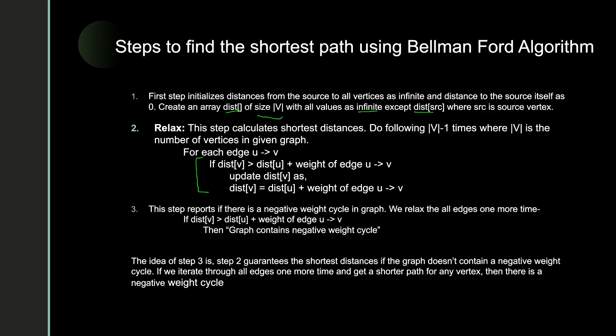The third step is for detecting if the graph contains a negative edge weight cycle. Step 2 guarantees the shortest distance if the graph doesn't contain a negative weight cycle. If we iterate through all the edges one more time and the distance still reduces, that means we are moving towards minus infinity — so the graph contains a negative edge weight cycle.